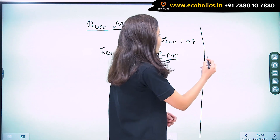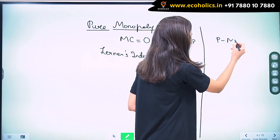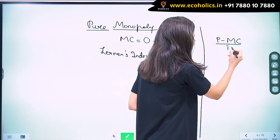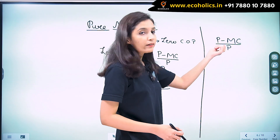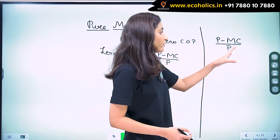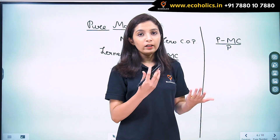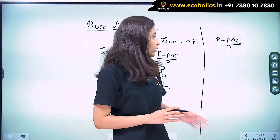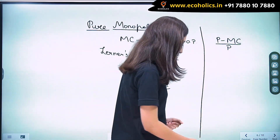So we have seen that Lerner's index is price minus marginal cost upon price. Greater the divergence between price and marginal cost, greater is going to be the monopoly power and greater is going to be the value of Lerner's index.